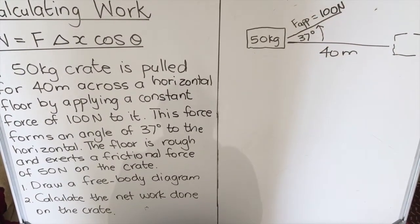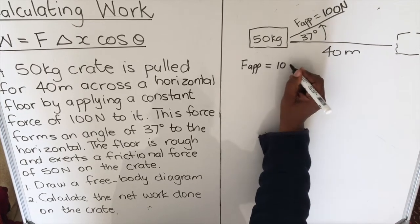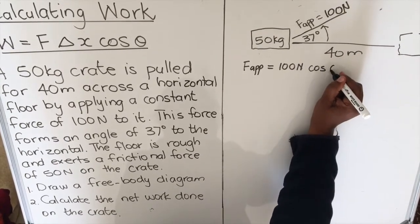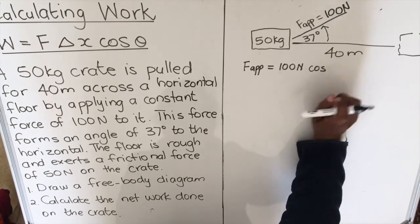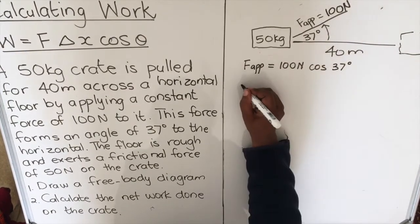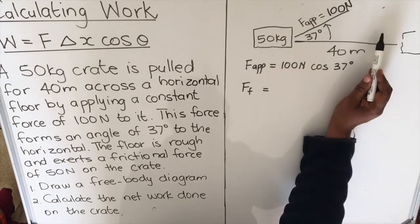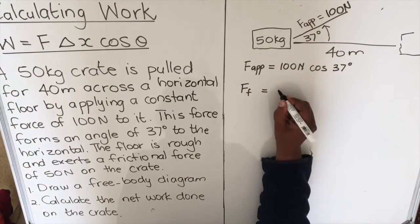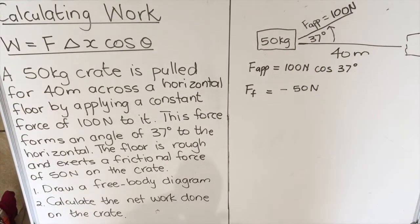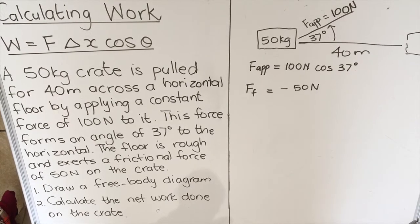In science it helps to write down what you are given. The applied force is 100 newtons, but it was not horizontal — it had an angle. The angle between the horizontal and the force is 37 degrees. The frictional force is a vector, so it has direction. Since the applied force is going one way, the frictional force goes in the opposite direction, so it will be negative 50 newtons. The question asks us to calculate the net work, so we must first find the net force by adding all the forces.